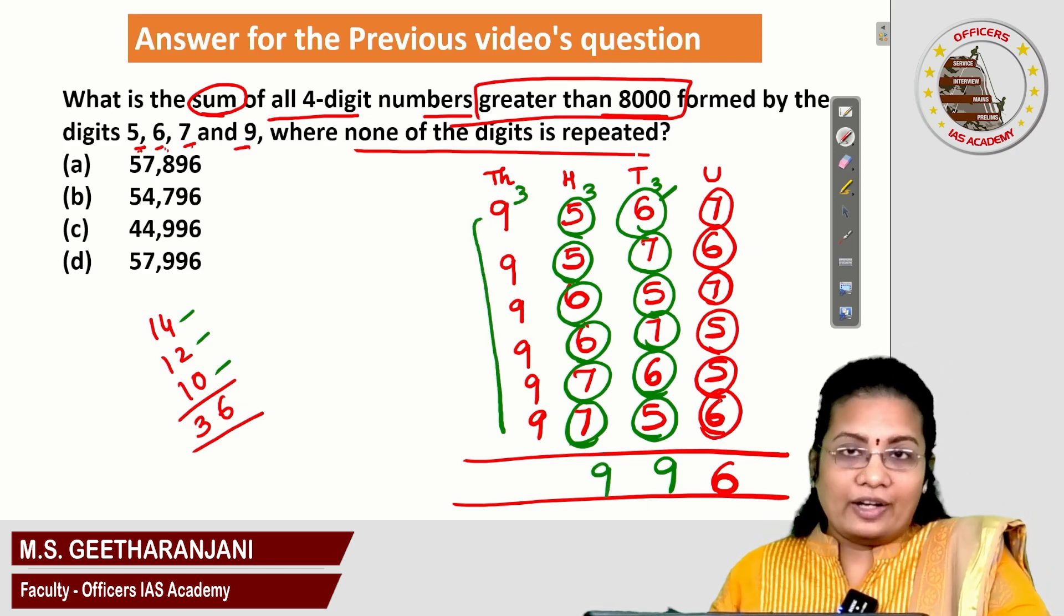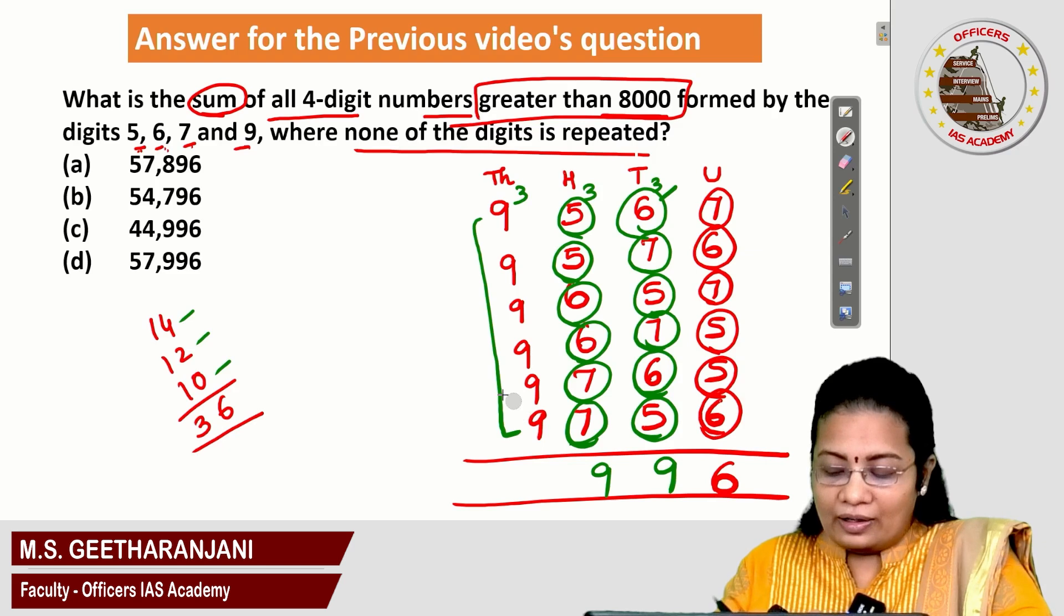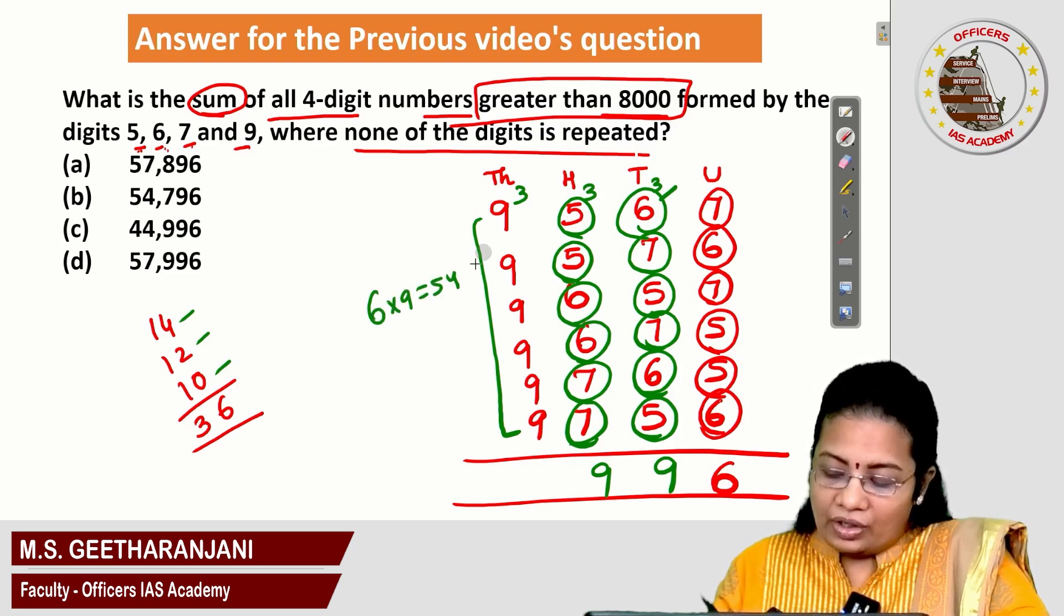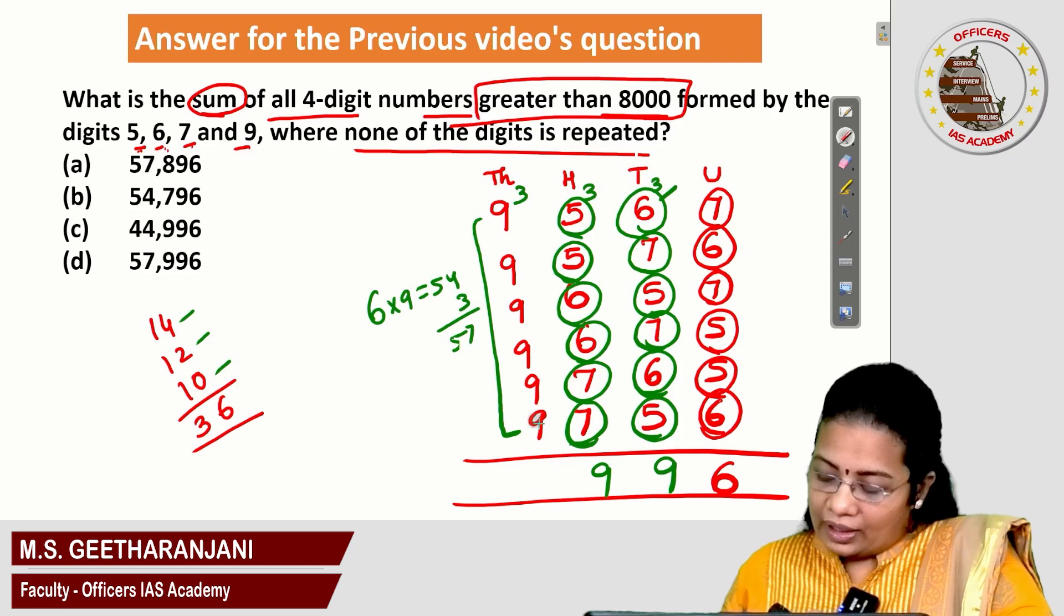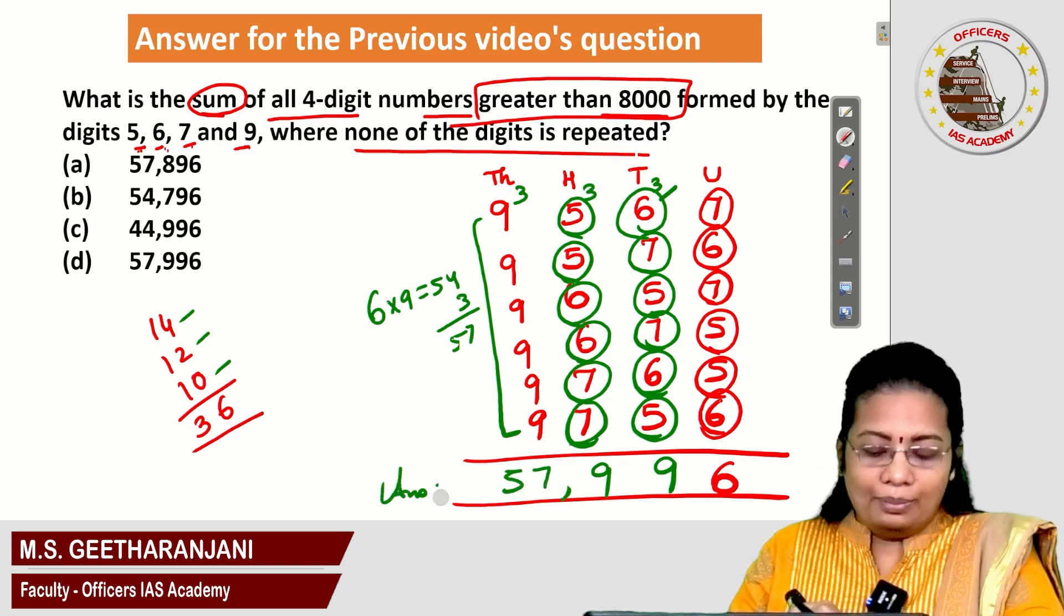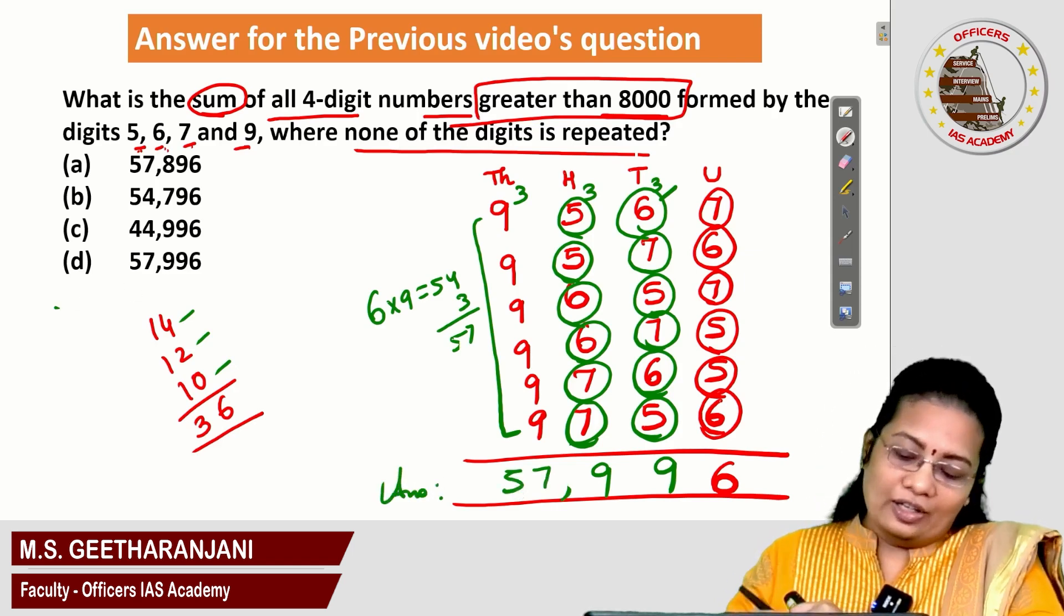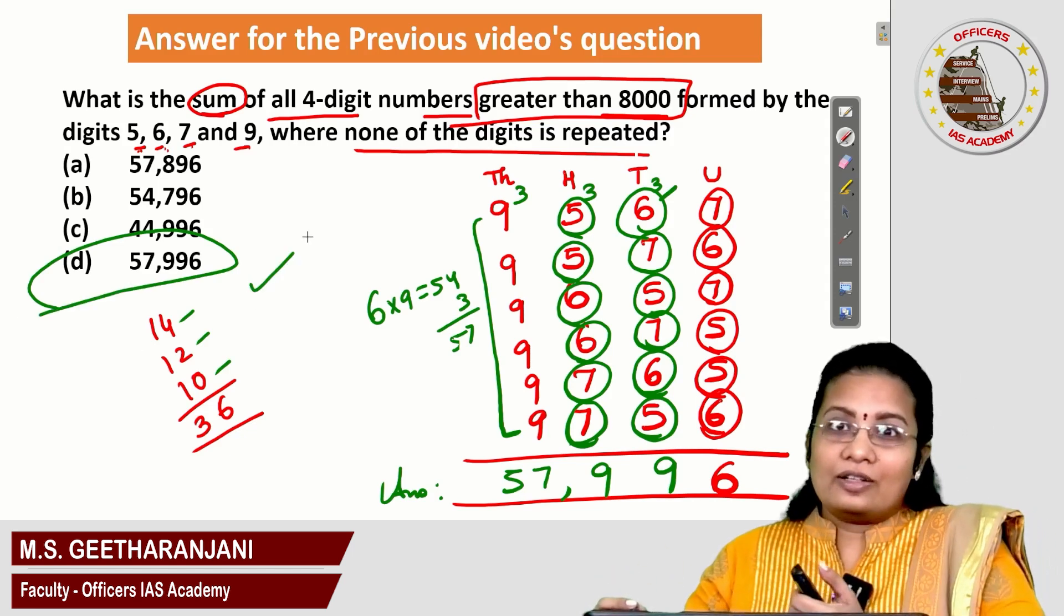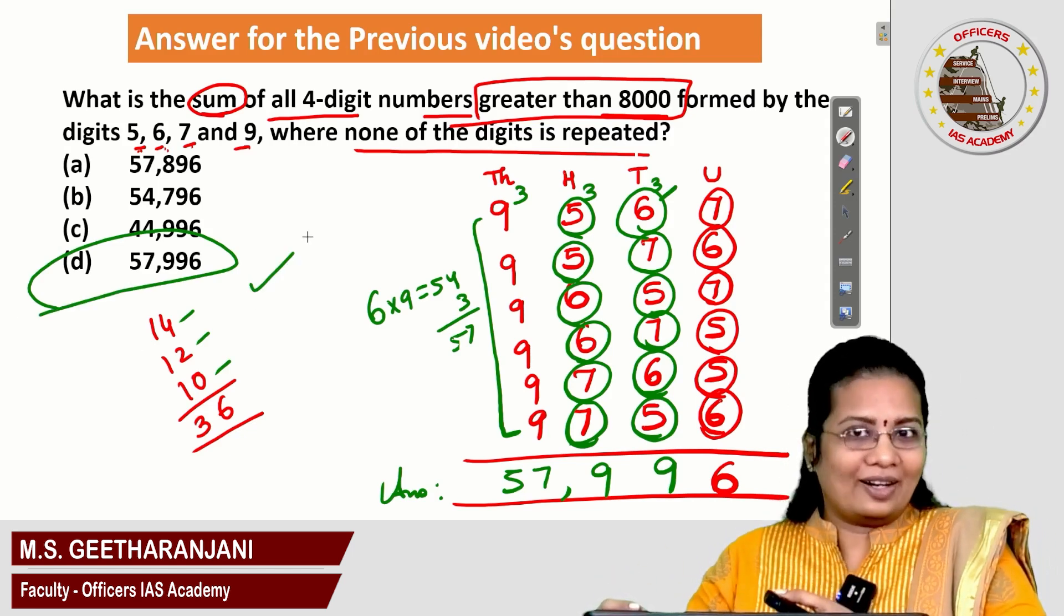In the final part, I got number of 9s. How many 9s? 6 times 9. 6 times 9 is 54. 54 plus the remaining 3 is 57. My answer is 57,996, which is option D. The correct answer is 57,996. Congratulations for those who gave correct answers.